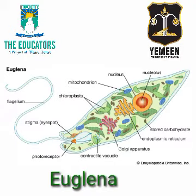Leaf-like Euglena has a flagella for movement, as you are seeing in the picture. Green colored chloroplasts are present that help in manufacturing of food, and it is also considered as a plant.